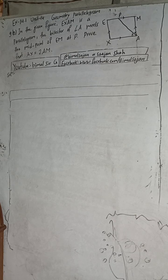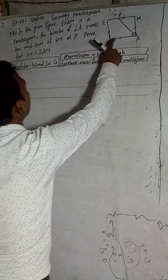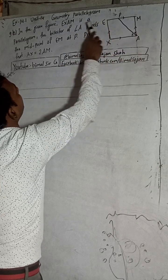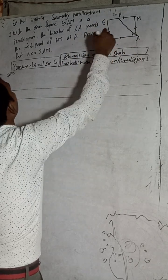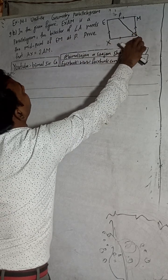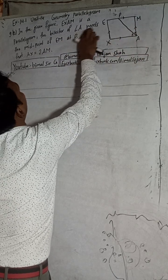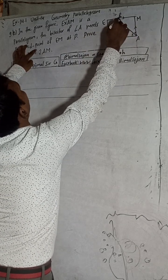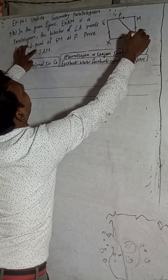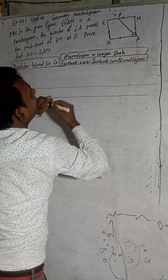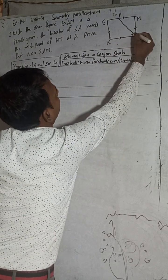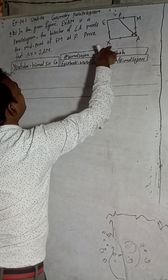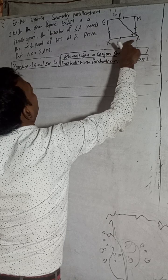In the given figure, EXAM is a parallelogram. The bisector of angle A meets the midpoint of EM at P. AP is the bisector of angle A, meaning this angle equals this angle. I have to prove that AX is equal to 2AM.